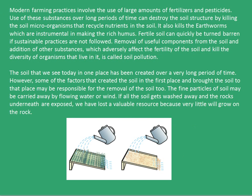The excessive use of fertilizers and pesticides causes soil pollution. Use of these substances for long periods of time can destroy the soil structure by killing soil microorganisms that recycle nutrients in the soil. It also kills earthworms which are instrumental in making rich humus. Soil pollution is defined as the removal of useful components from the soil and the addition of substances which adversely affect the fertility of the soil and kill the diversity of organisms that live in it.